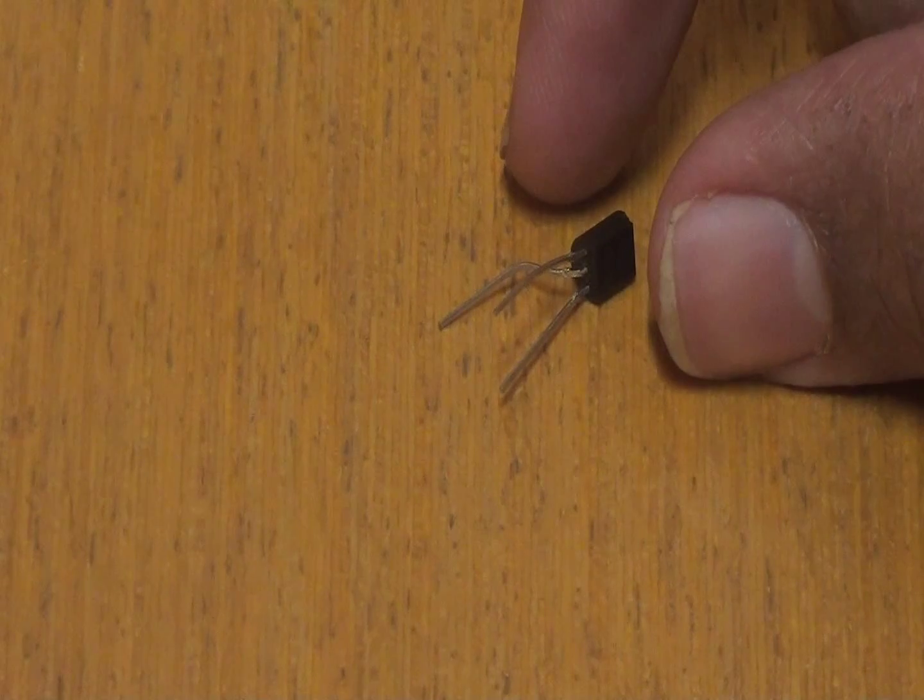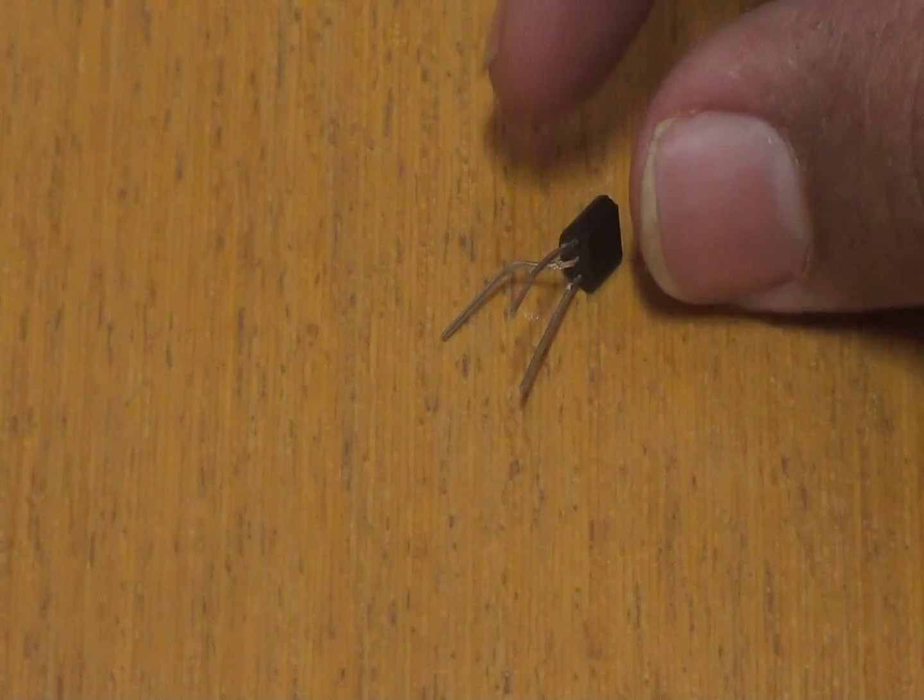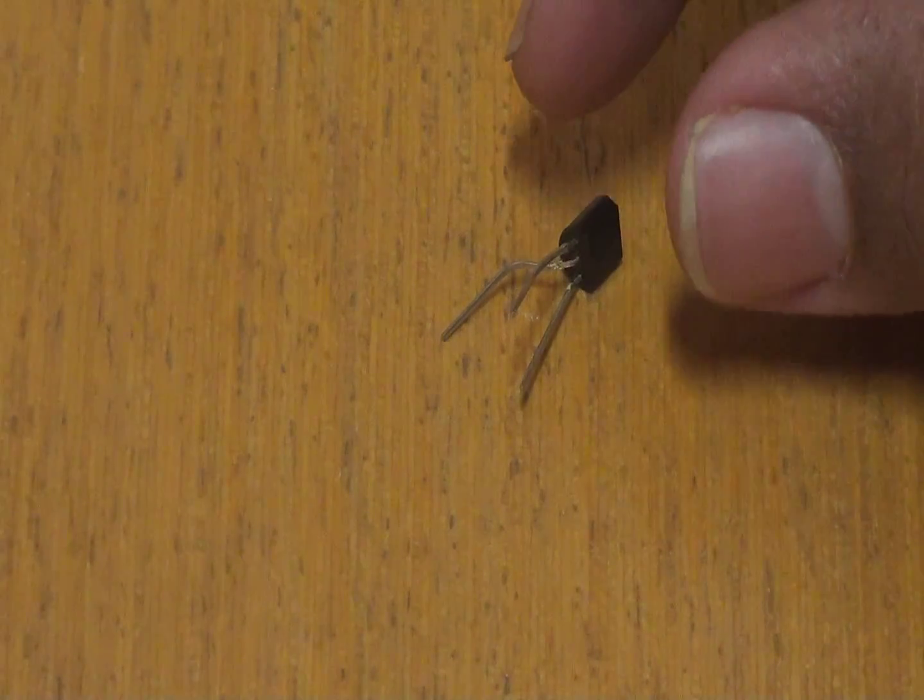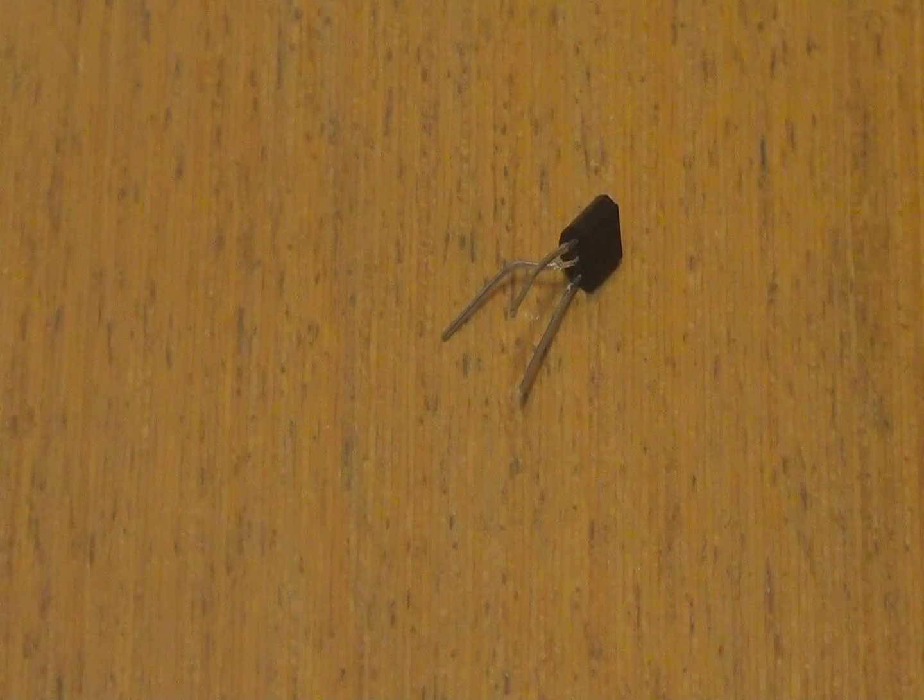This BC547 is an NPN bipolar junction transistor, or you can say an NPN BJT, which is a semiconductor device used to amplify and switch electronic signals and electrical power. Transistor works also wonderfully for many computer applications or productions.